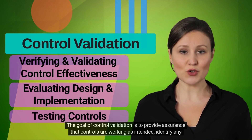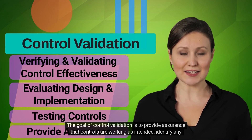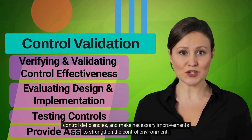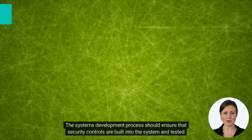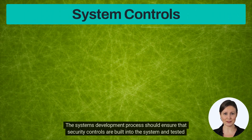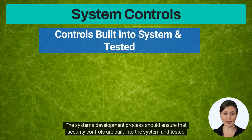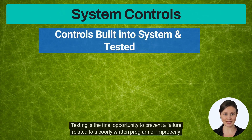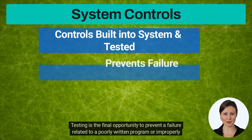The goal of control validation is to provide assurance that controls are working as intended, identify any control deficiencies, and make necessary improvements to strengthen the control environment. The systems development process should ensure that security controls are built into the system and tested prior to deployment.